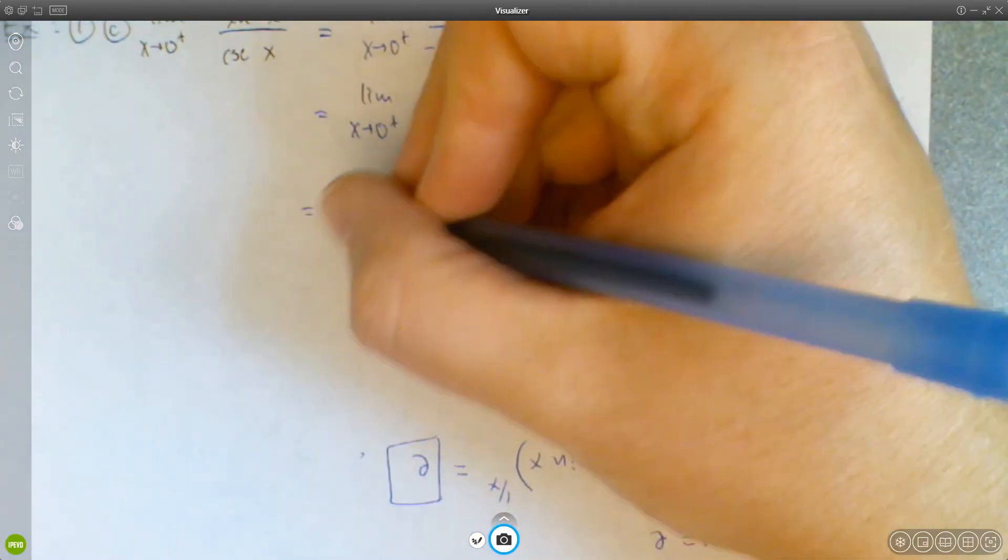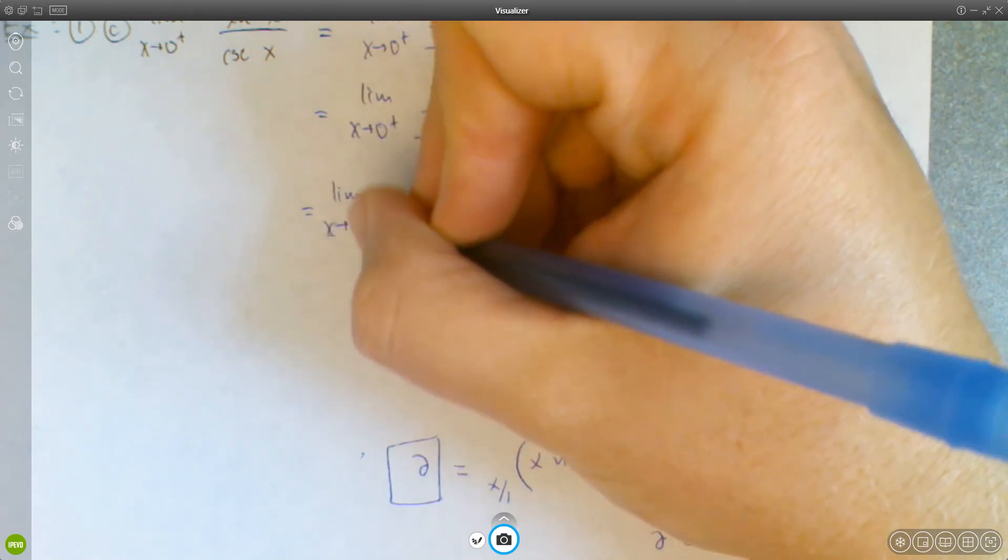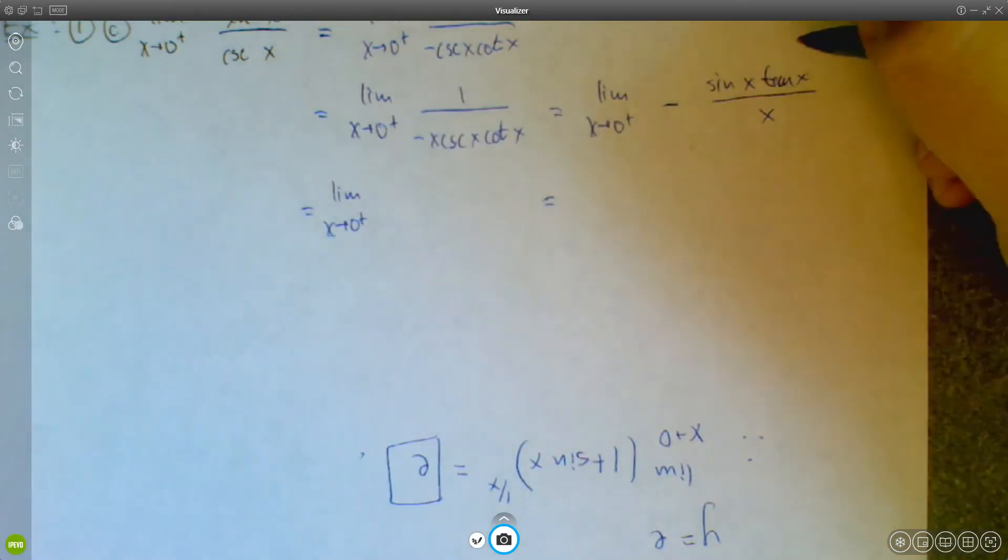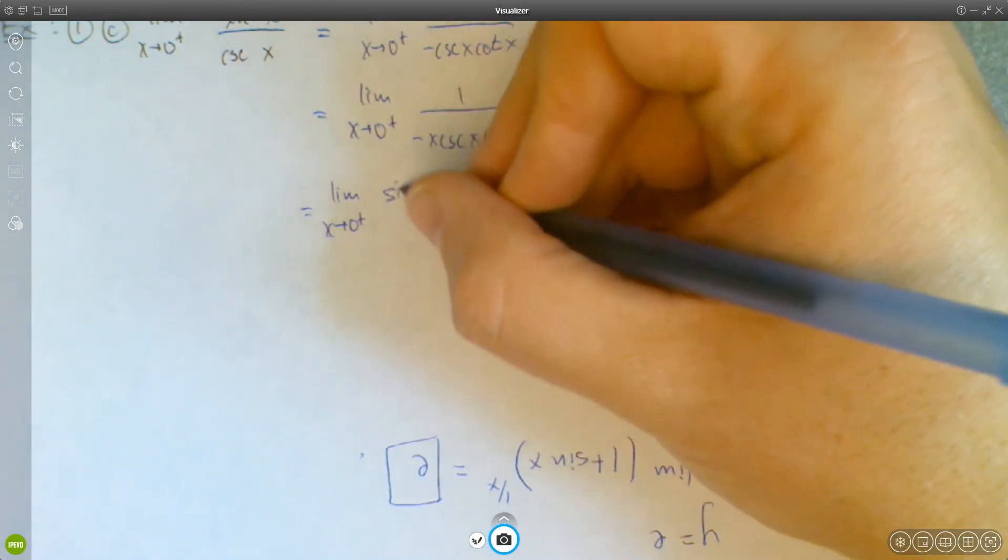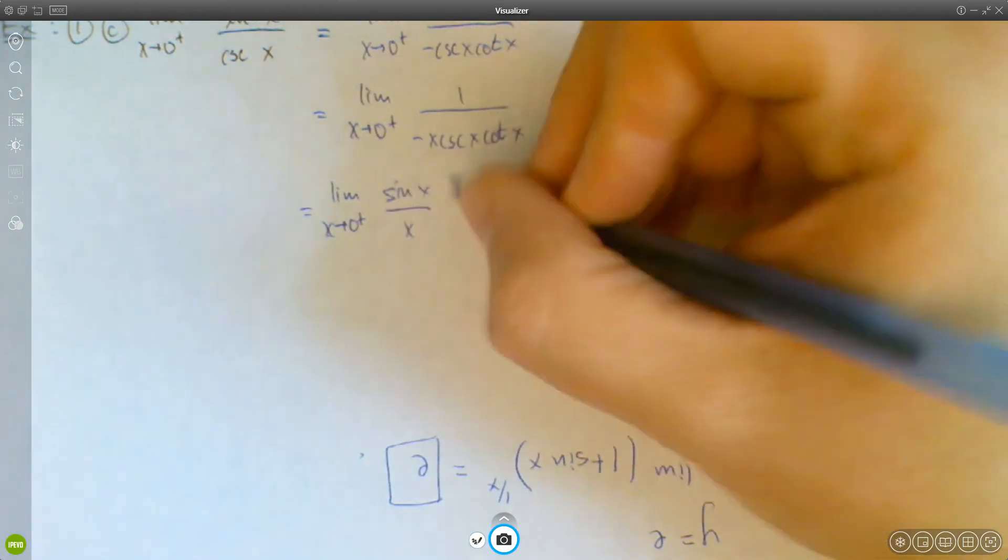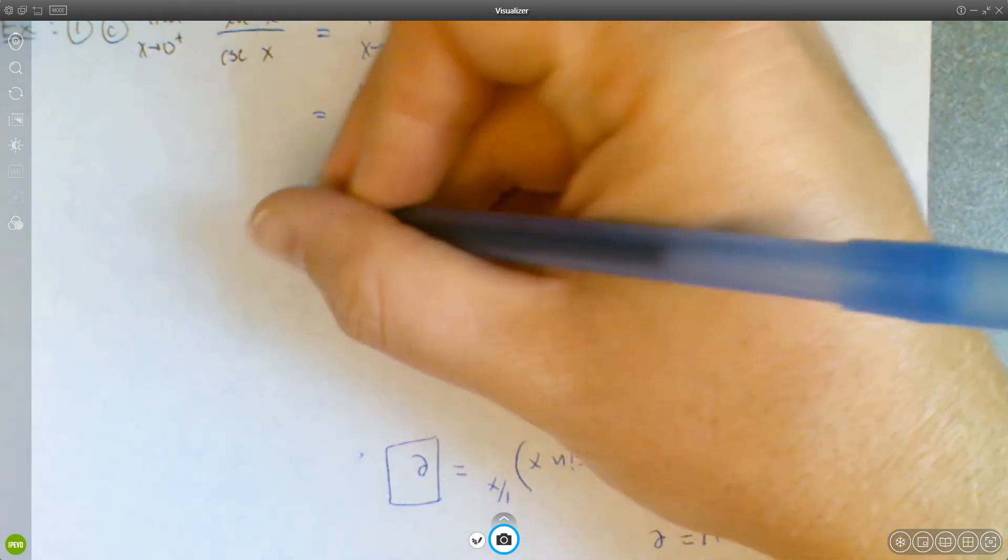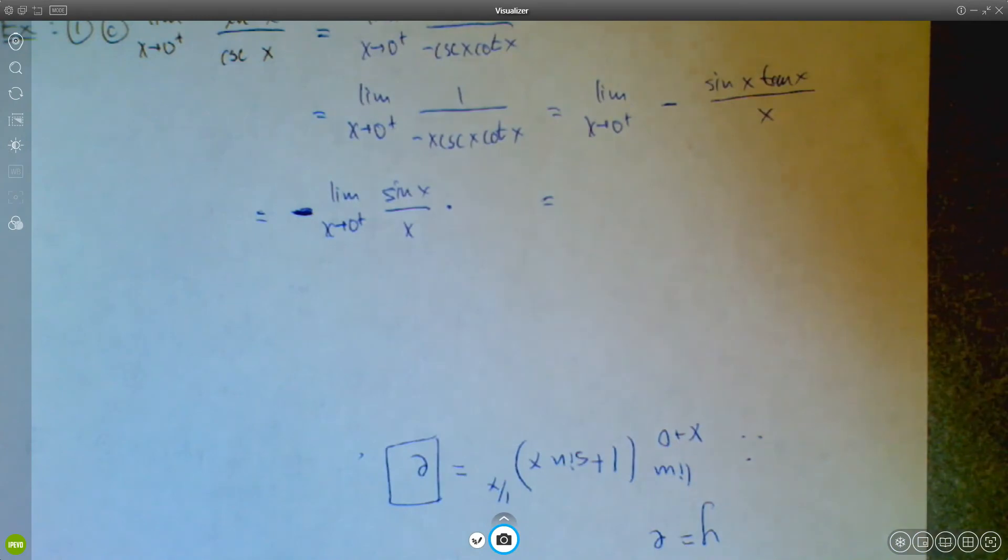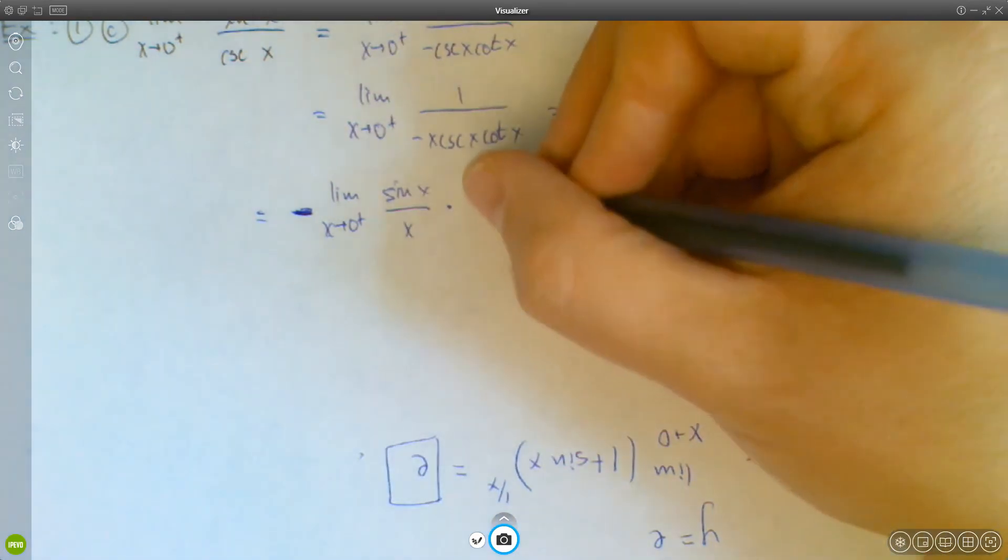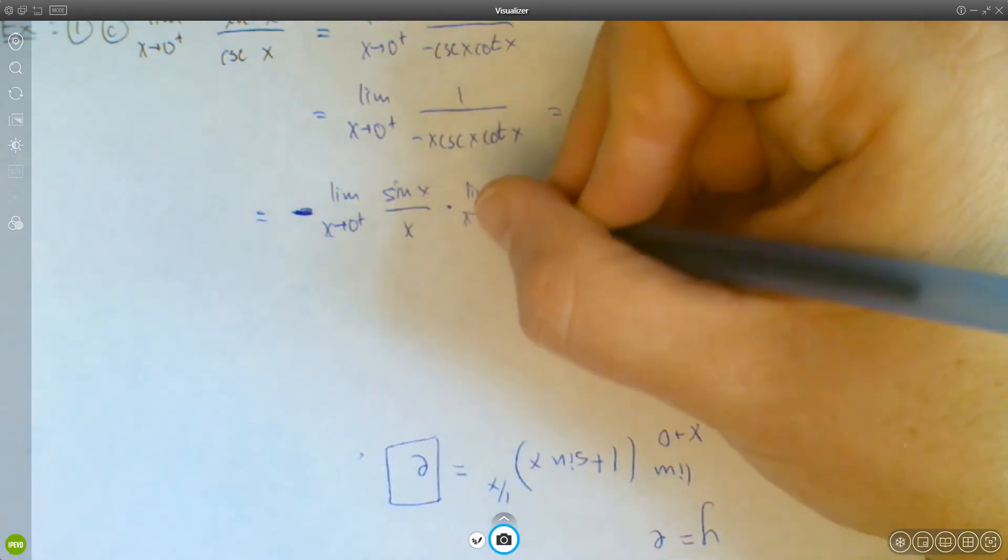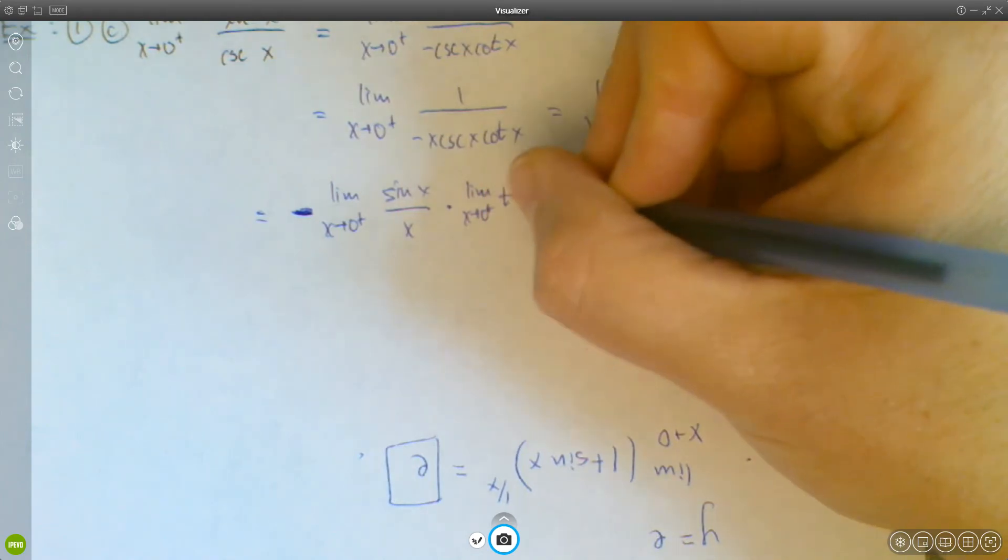actually, let me do this over here. We can take this and split it, right? We can split it into sine x over x times, and I'll bring the negative out here, maybe. So I'll call this negative limit of sine x over x times limit as x approaches 0 of tangent x.